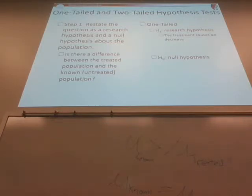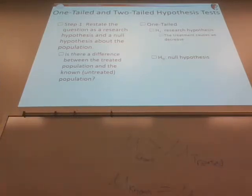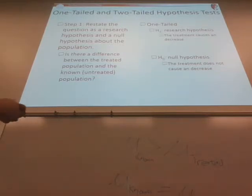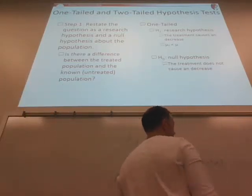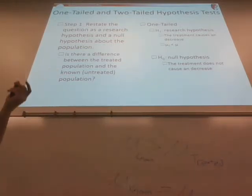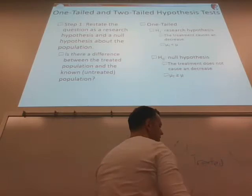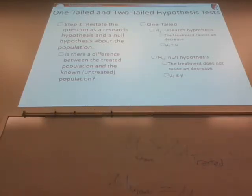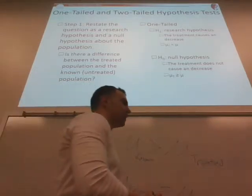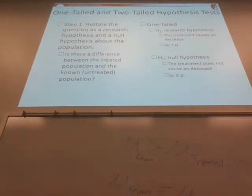For a treatment hypothesized to cause a decrease, the research hypothesis is that the treated mean is less than the known mean. The null hypothesis is the complete opposite: the treatment does not cause a decrease — meaning the treated mean is greater than or equal to the known mean. That covers the remaining two possibilities, giving a complete research and null hypothesis covering all three scenarios. Note: your homework may not always make the less-than-or-equal-to distinction, but it is the correct way to do it.